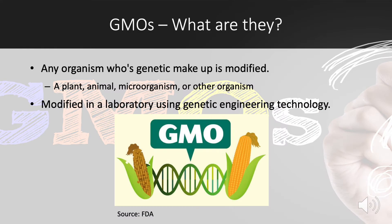GMOs — what are they? A GMO is any living organism whose genetic material has been artificially modified in a laboratory using genetic engineering technology. It was approved for insulin use in 1992 and then food use in 1996. It is important to remember that this could be an animal, plant, or any microorganism.